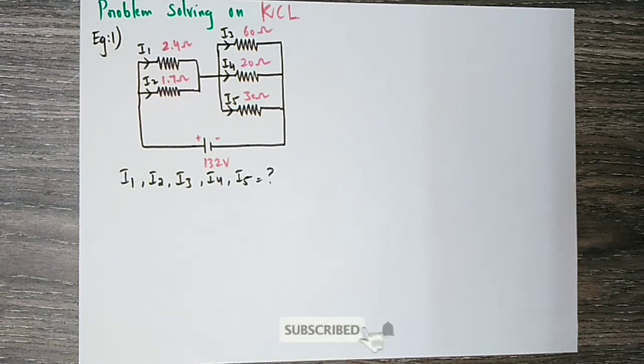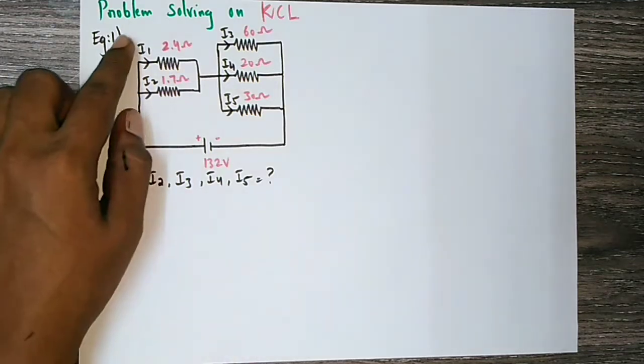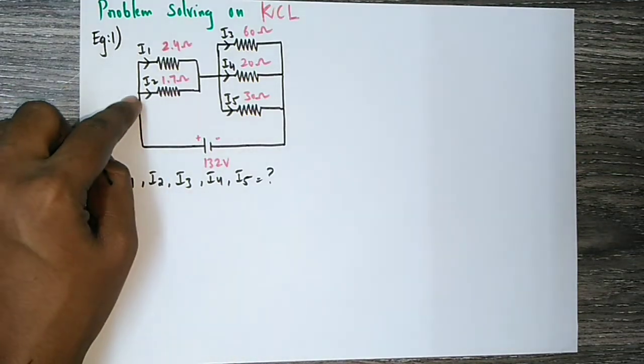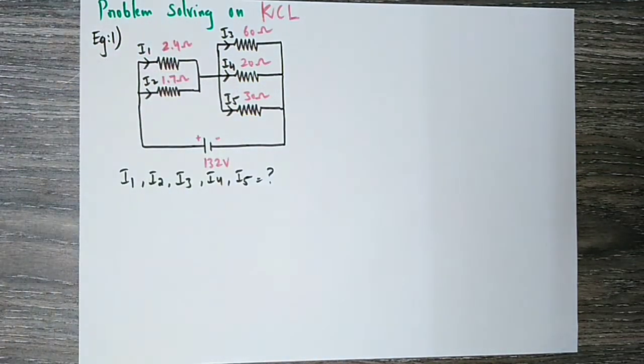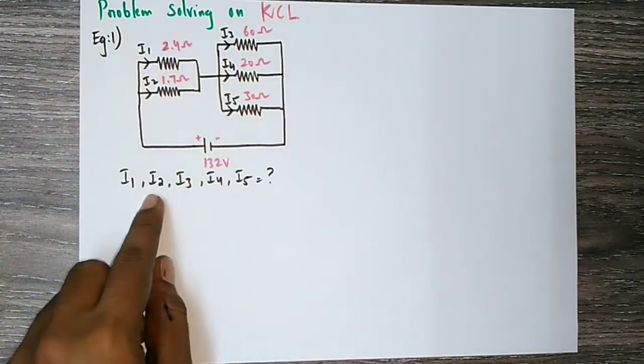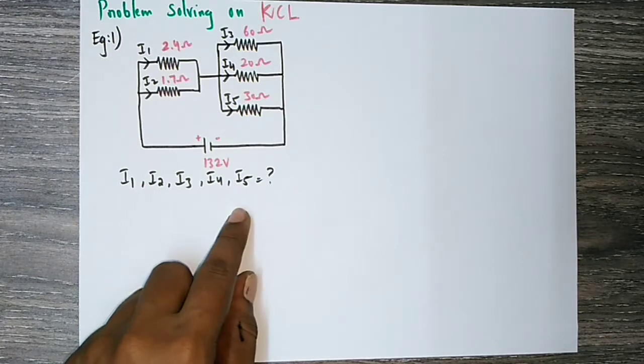We are using a circuit. There are resistors and branch currents: I1, I2, I3, I4, I5. We can use I1, I2, I3, I4, I5 to apply the law.